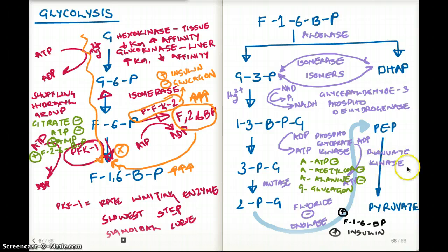Now pyruvate kinase is inhibited by ATP, acetyl-CoA, alanine, and glucagon. And it's stimulated by fructose-1,6-bisphosphate, which is right here. It's stimulated by fructose-1,6-bisphosphate, all the way to here. And it's also stimulated by insulin.